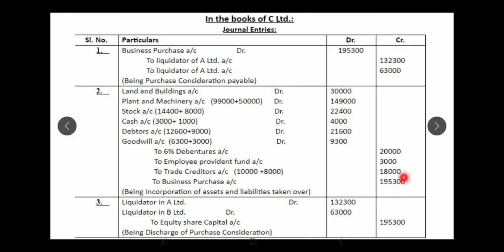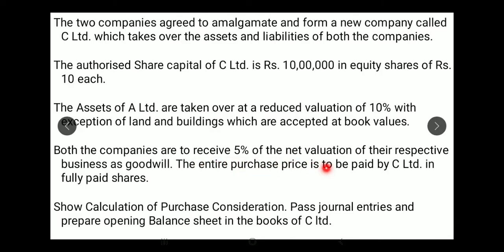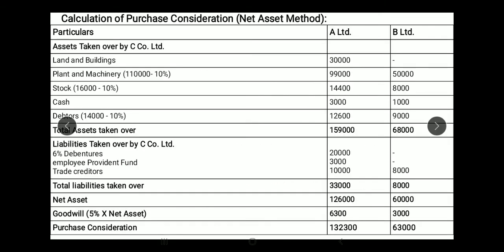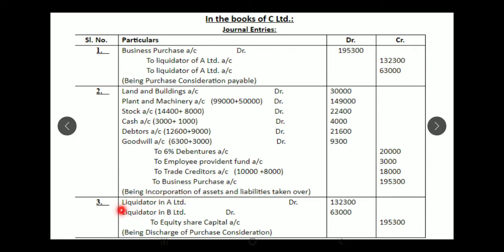In the net asset method, unlike net payment method, debit and credit totals are the same. The third journal entry settles the liquidators' claims. Since the entire purchase price is paid in fully paid equity shares, the entry is: Liquidators of A Company Account Dr. and Liquidators of B Company Account Dr. to Equity Share Capital Account — equity shares are issued to settle the purchase consideration.